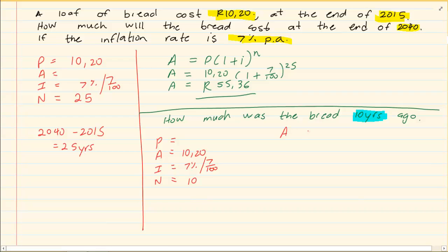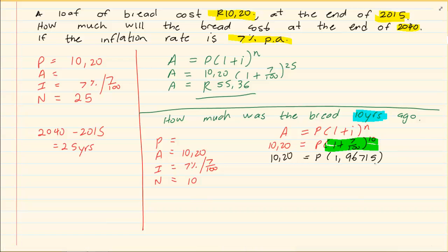Again we are using the compound interest formula. You substitute what you have. Now if you look at your algebra, 1 plus 7 over 100 to the power of 10, I will have 10.20 equals P times 1.96715. Look at what I did. Even though standardly your exam paper will say round off to two decimal places, when you are doing financial maths you don't round off at an early time. So you have to keep at least five spaces. Only at the end on your final answer do you round off.